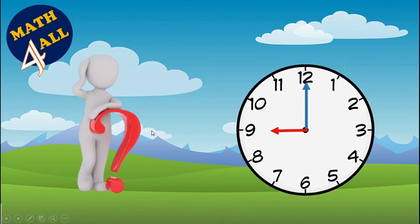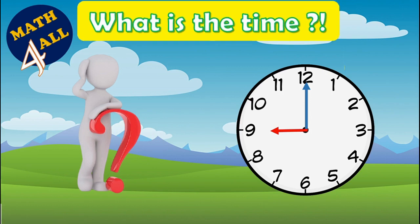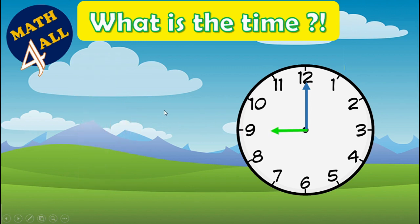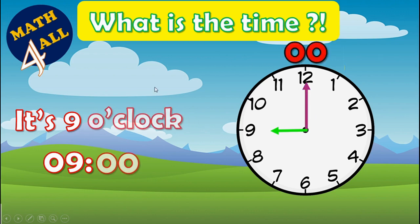Now, what is the time — can you read it? Look at the short hand: it's on nine, so I write 'nine.' But nine what? The long hand is on twelve, so we start the minutes at zero zero. It's nine o'clock.